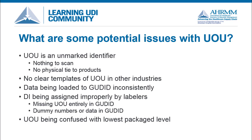The novel nature of this concept has resulted in confusion regarding the creation and implementation of the Unit of Use Identifier. As an unmarked identifier, there is no physical barcode to scan. In order to use the UOU DI, it may be necessary to create alternative mechanisms, such as using shelf tags or reference labels on storage bins to represent the Unit of Use DI. Additionally, some manufacturers may have loaded data to the GUDID inconsistently. The Unit of Use DI may be missing entirely or contain dummy numbers and/or data. We also have examples where the Unit of Use DI is confused with the lowest packaged level.